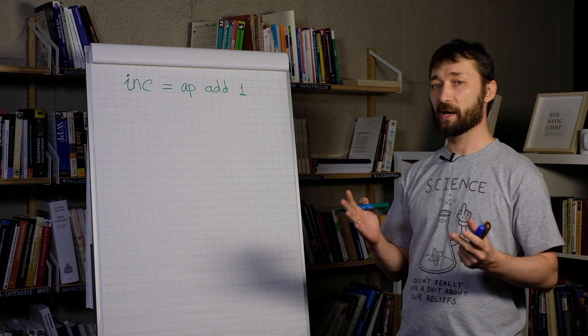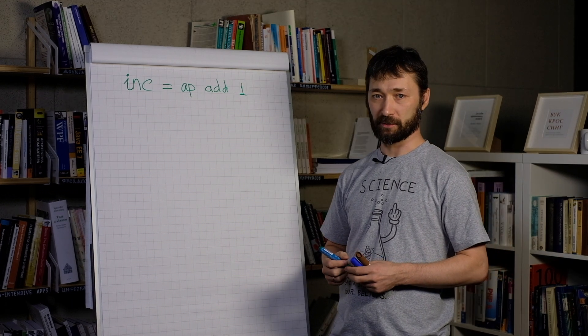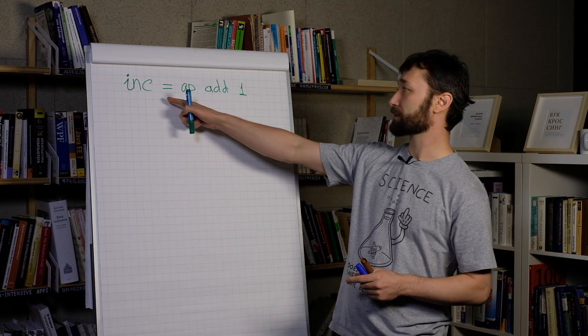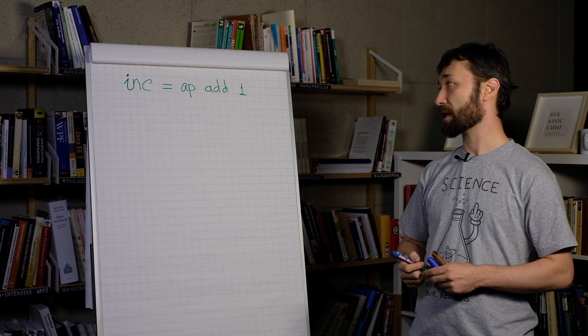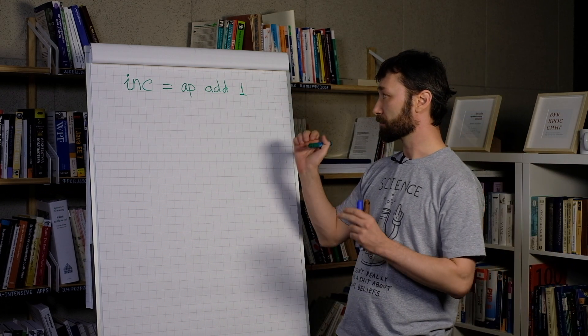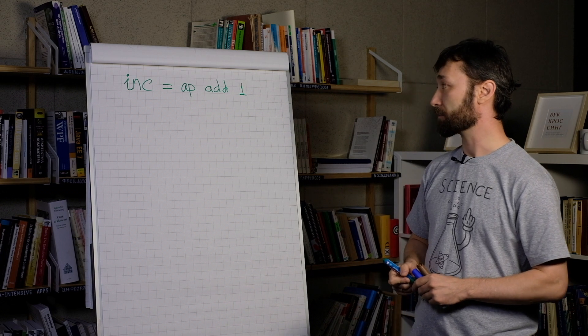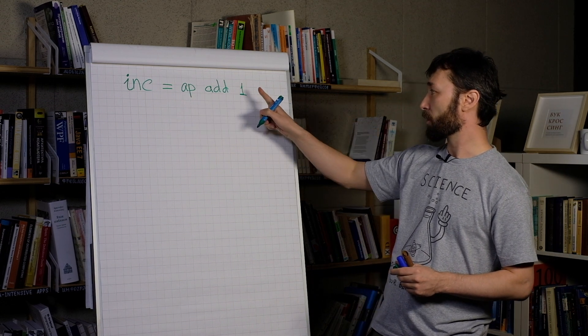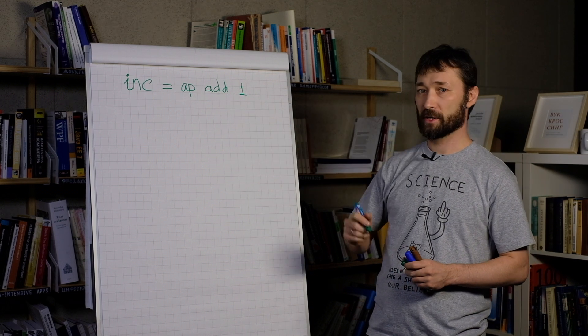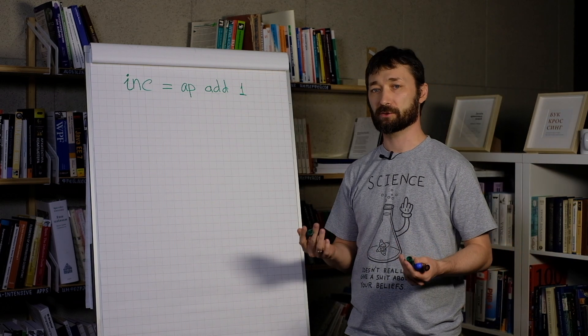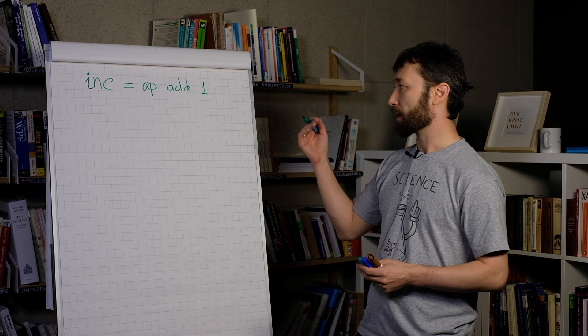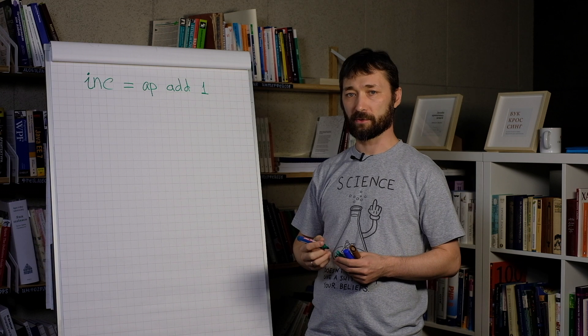We have the whole message about this operator, message number 17. And this line is exactly from that message. Let's look at this line. It applies one argument to the function add. But as you remember, add is a function of two arguments. And here we apply only one of them.